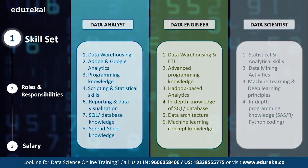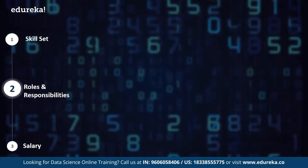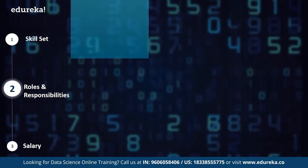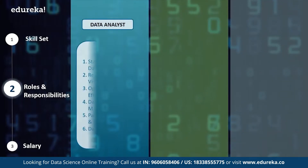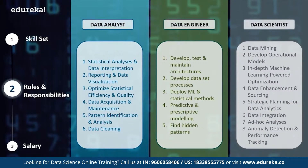Now let's look at the typical roles and responsibilities of these professionals. The roles and responsibilities of a data analyst, data engineer, and data scientist are quite similar as you can see from the slides. A typical data analyst is responsible for statistical analysis and data interpretation, and should be well familiarized with various data reporting and visualization tools. For example, if working in Python, you should know libraries like matplotlib and seaborn; if using R, you should use ggplot or similar visualization libraries. A data analyst should never compromise on quality and must be comfortable with data equation maintenance, pattern detection, and data cleaning.